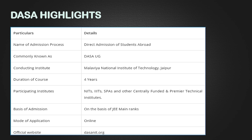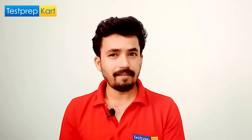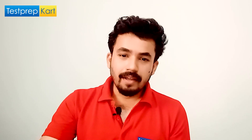Students seeking admission in four-year courses need to go through this DESA counseling process for colleges like NITs, IIITs, SPAs, and centrally funded institutes. Admission is solely based on your JEE marks and JEE scorecard. Previously SAT scores were considered, but from this year onwards they take JEE Main scores. The entire application process is online, and you can visit www.desanit.org for more information.